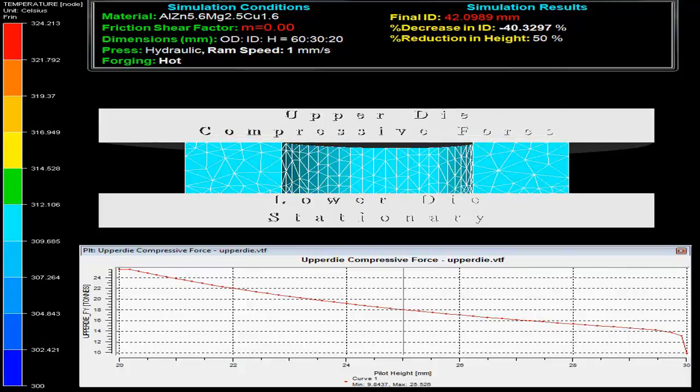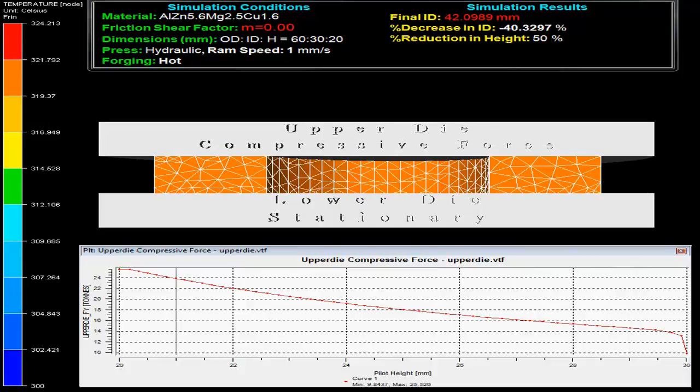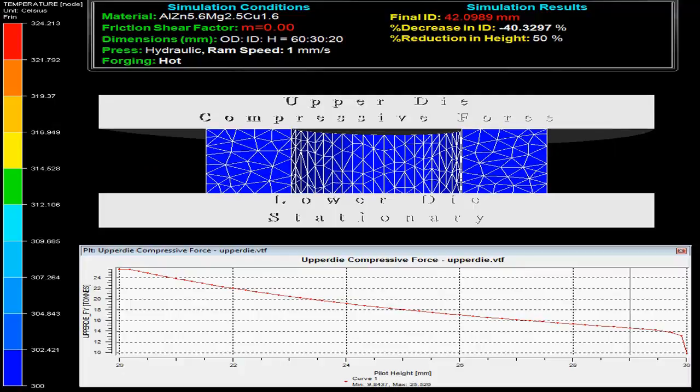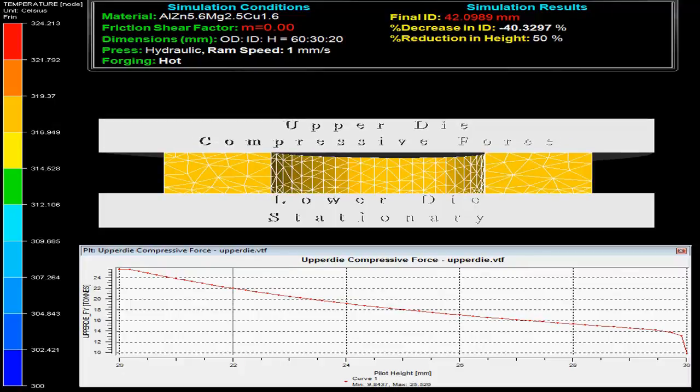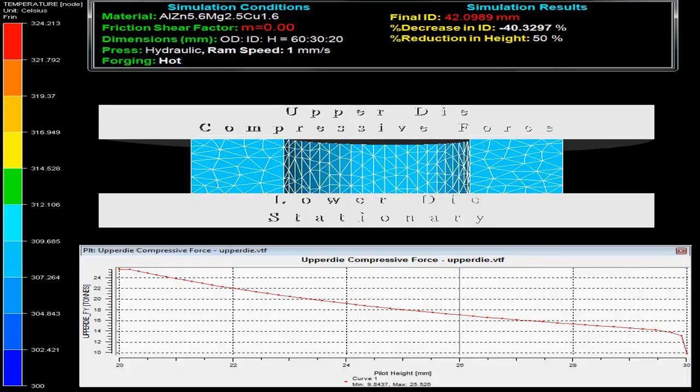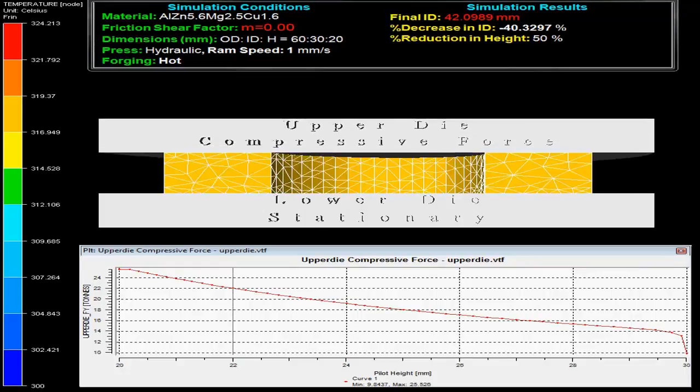Ring compression test has been widely used as a test to evaluate the friction condition in metal forming process. The video shows that a short ring specimen is plastically compressed between two flat dies with lower die stationary and upper die movable.